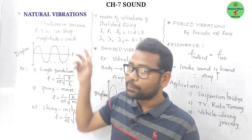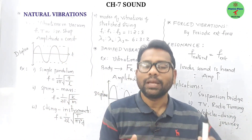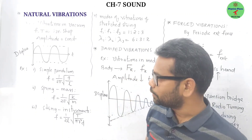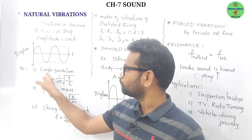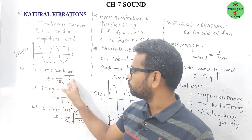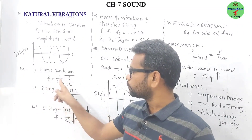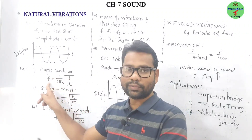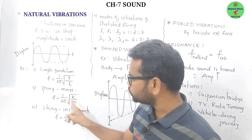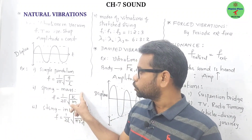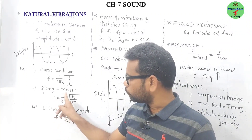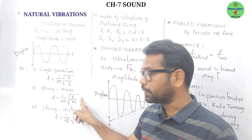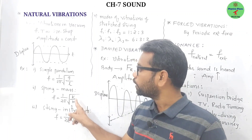The frequency and time period of natural vibrations depend on the size and shape of the vibrating object. For a simple pendulum, frequency = 1/(2π) × √(g/l) — inversely proportional to length. For a spring-mass system, frequency = 1/(2π) × √(k/m), so by changing spring constant k and mass m we can change the natural frequency.